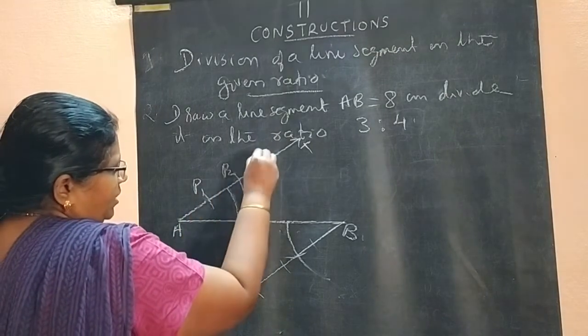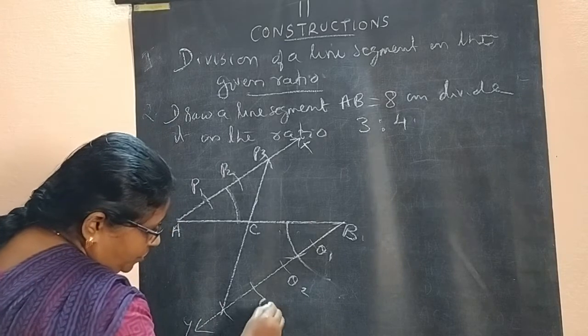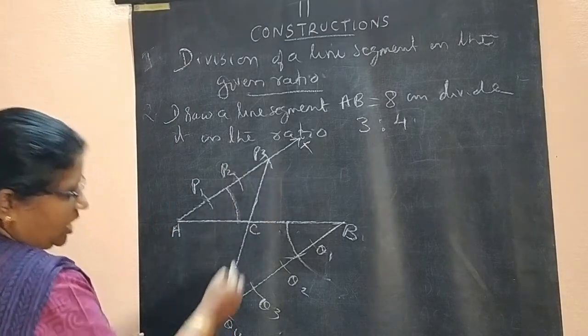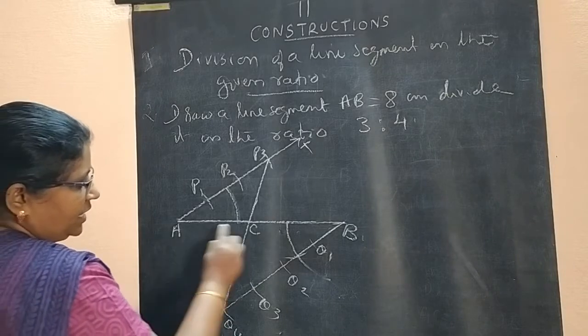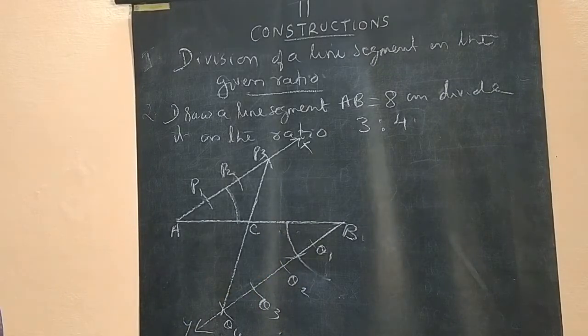So it is P1, P2, P3. It is Q1, Q2, Q3, Q4. Join P3 and Q4. Then, this line will be dividing in the ratio 3 is to 4.